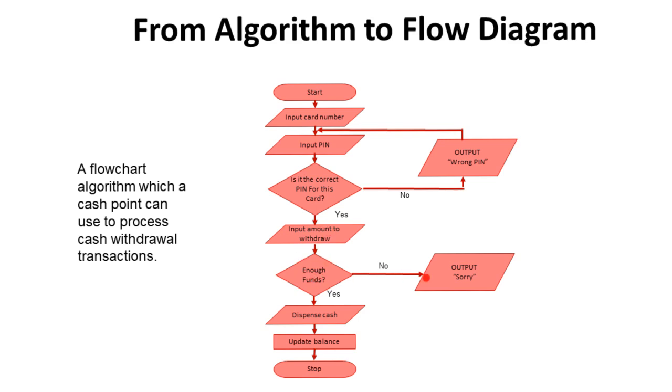If they don't have enough funds, it outputs sorry. If they do have enough funds, it dispenses the cash and updates their balance. Now, this is an incredibly simplistic flow diagram. And obviously, the realistic situation is more complex than this.